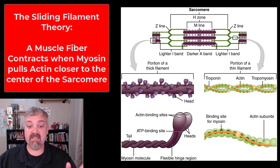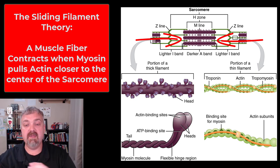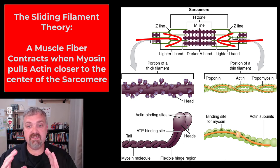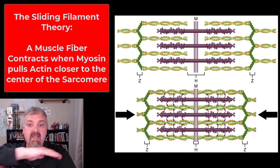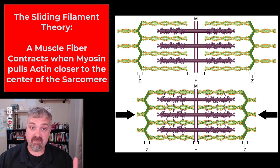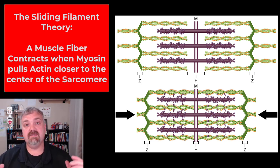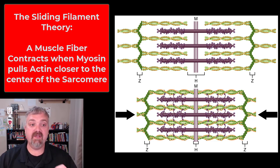Really big picture: myosin, the thick filaments inside our sarcomeres, when the time is right, can grab onto actin and pull it towards the center. Those purple myosins in the middle pull actin toward the center — you can see at the top it's relaxed and at the bottom it's contracted. The myosin heads grab actin and pull it in both directions, shortening the sarcomere. Each myofibril is made of hundreds and thousands of these sarcomeres, and as all these sarcomeres shorten, so will the muscle. That's the real big picture of the sliding filament theory.